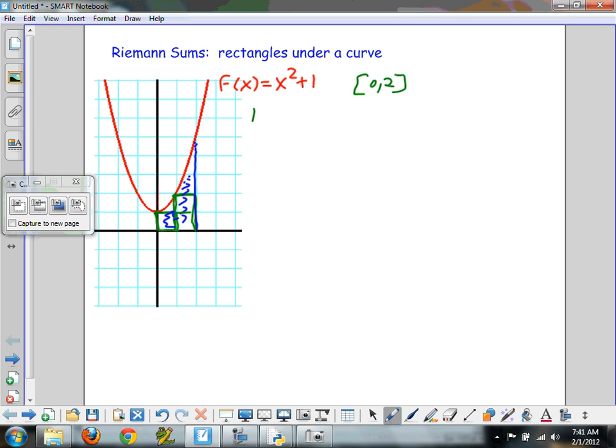you can see there are 1, 2, 3 rectangles. The lower sum is 3 rectangles, or 3 squares, or 3 units.